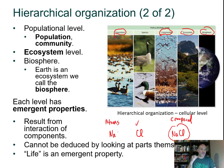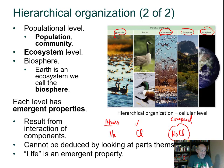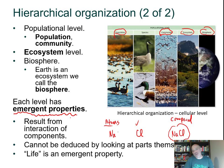Emergent properties occur at every level of organization. When you go from compounds to large molecules, you cannot predict the outcome by summing the lower-level properties — each level requires its own study. One of the most amazing emergent properties is conscious thought, which occurs when a large amount of nervous tissue becomes highly organized in the human brain.